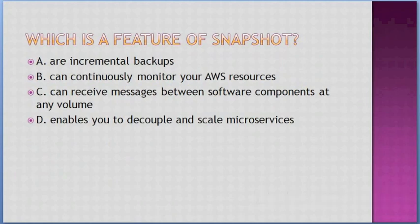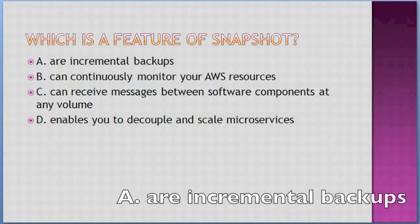Which is a feature of Snapshot? Options: A. Are incremental backups, B. Can continuously monitor your AWS resources, C. Can receive messages between software components at any volume, D. Enables you to decouple and scale microservices. Answer: A — are incremental backups.